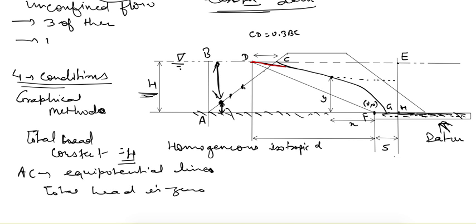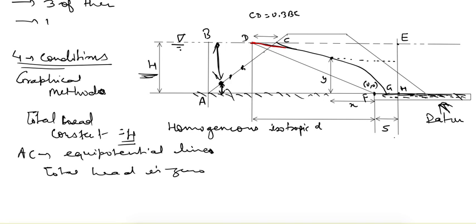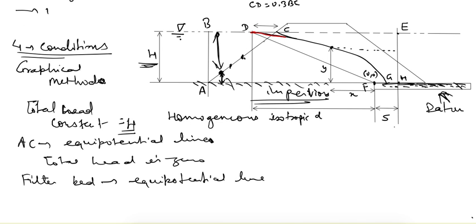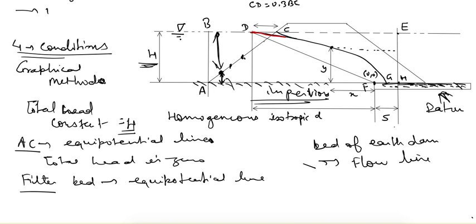On the downstream side, the filter bed has a total head of zero because the water level is not rising, but the total head is still constant. So this filter bed is also an equipotential line. Since the bed surface of the earth dam is assumed impervious, flow cannot cross it and will travel along it, making the bed of the earth dam a flow line.